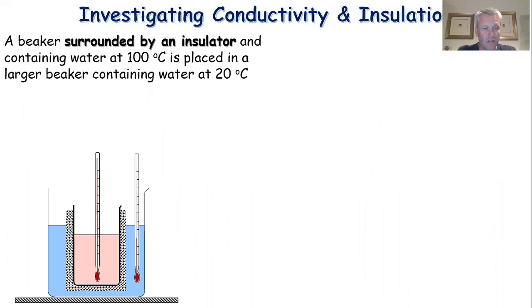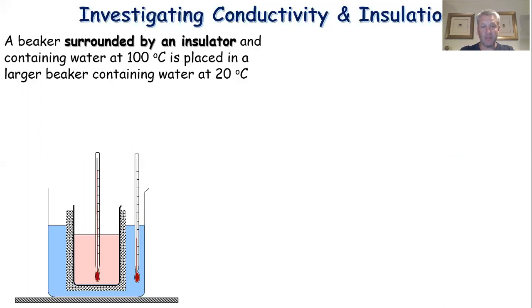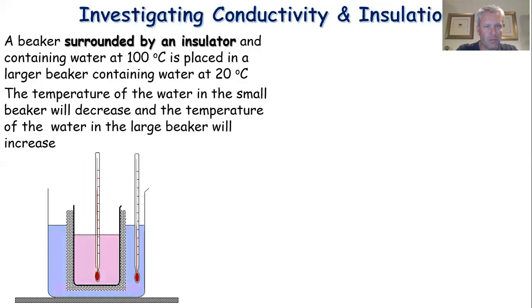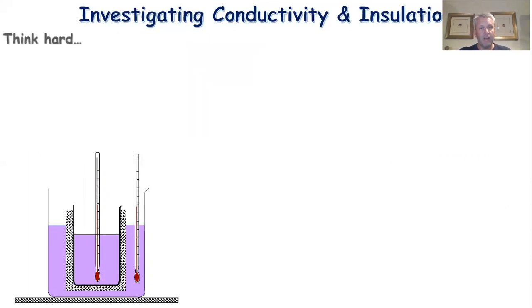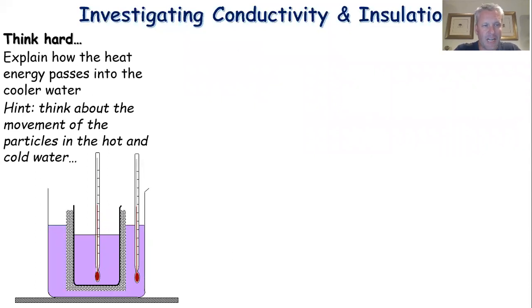Consider a small beaker surrounded by an insulator containing water at 100 degrees Celsius, placed into a larger beaker containing water at room temperature - about 20 degrees. The temperature in the small beaker will decrease and the temperature in the large beaker will increase until they are equal. The thermal energy is being passed out through the insulating material from the hot inner beaker to the cooler outer water.